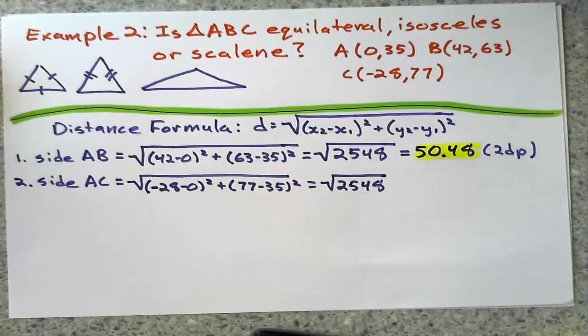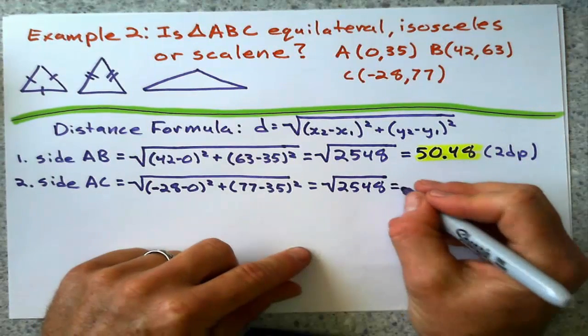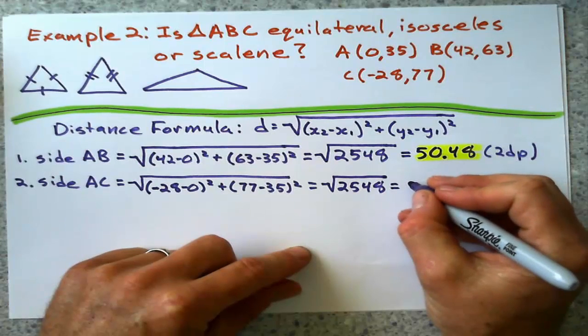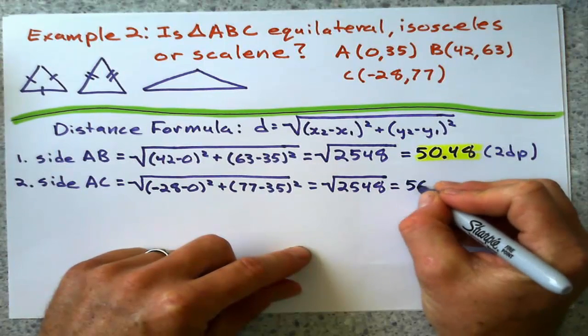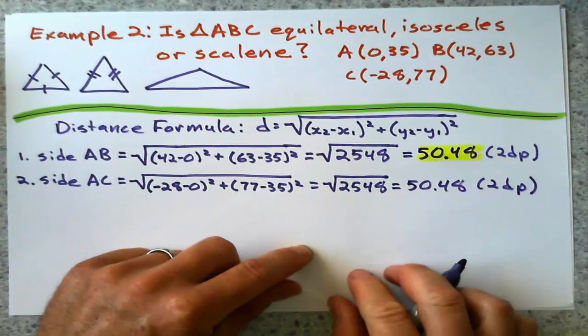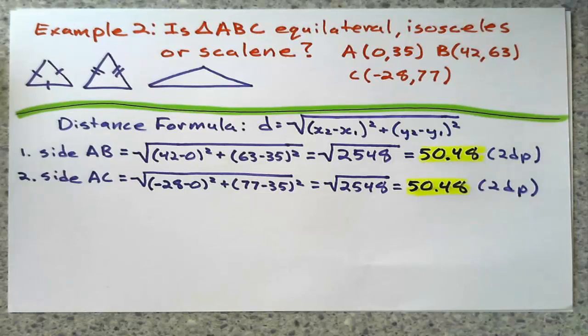And when I do all this under the radical first, I get the same. 2,548. So I know it's at least isosceles. At least. That's nice. It's at least isosceles.